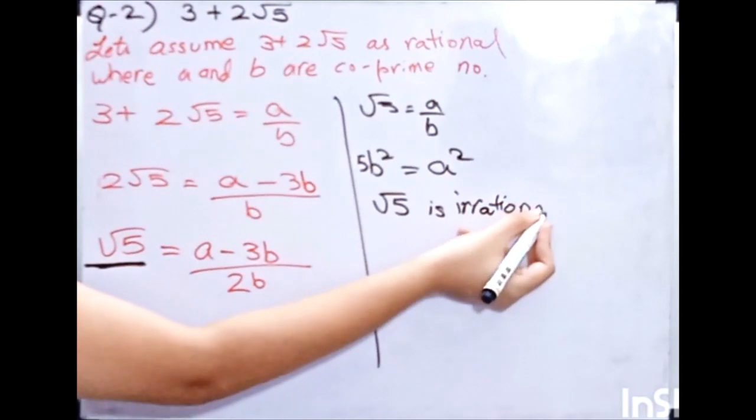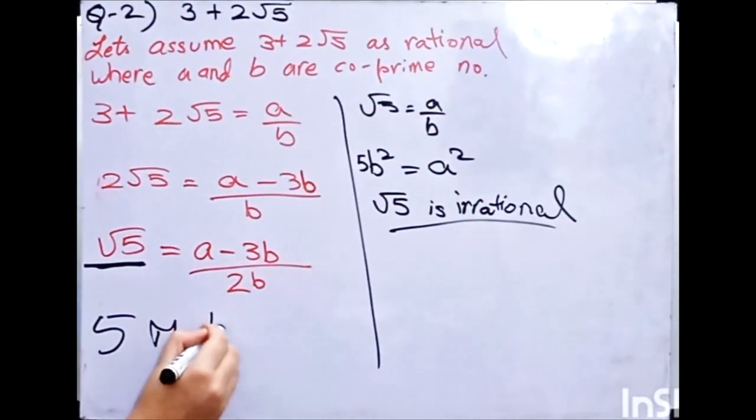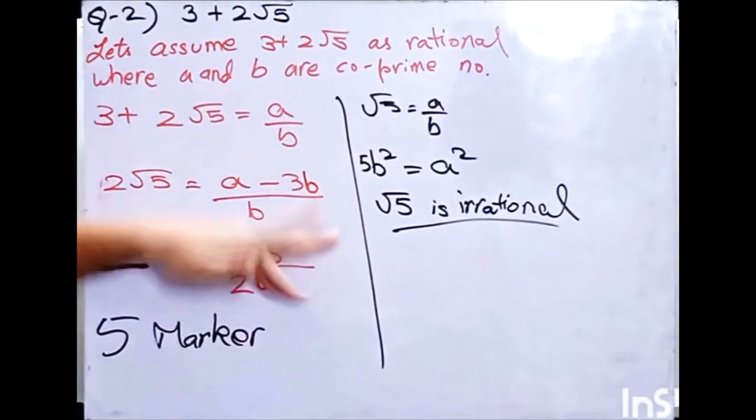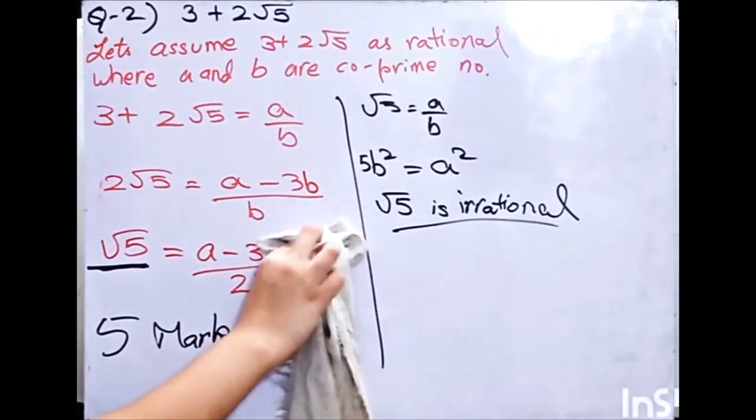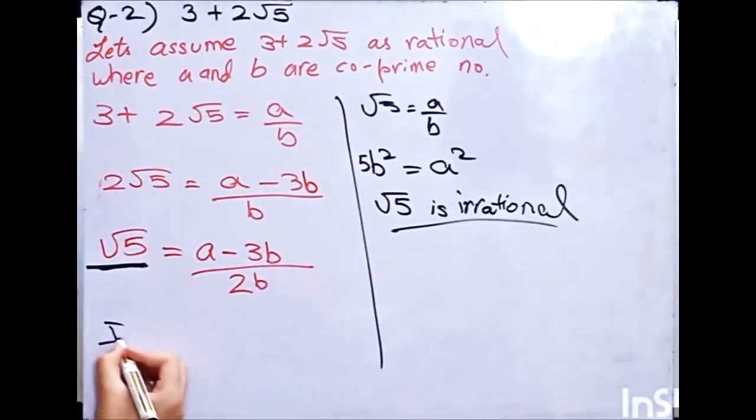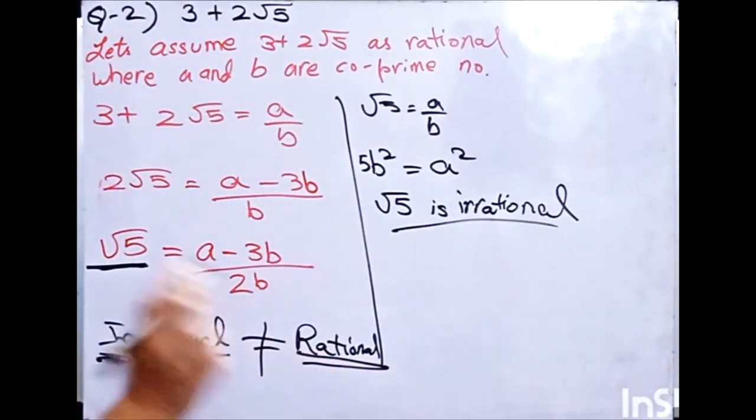So now what you will do is, if this question is 5 marker, then you will do this whole thing. What we have done in the last question, that is what you will do. You will do it here, then you will continue. And then you will say that irrational cannot be equal to rational. Irrational is not equal to rational. And by this theorem, you will prove it.